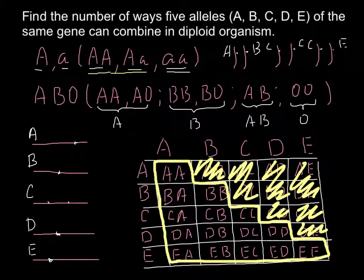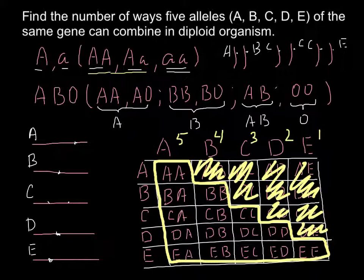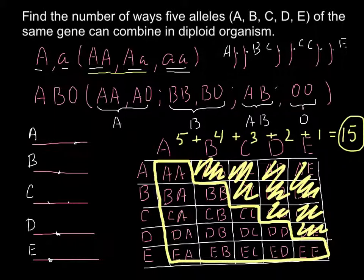Here is another method to count them. In the first column we have 5 different variants, in the second column we have 4, in the third we have 3 left, then 2, and 1 in the last row. So we just add all these numbers: 5 + 4 + 3 + 2 + 1, and the answer would be 15 different genotypes.